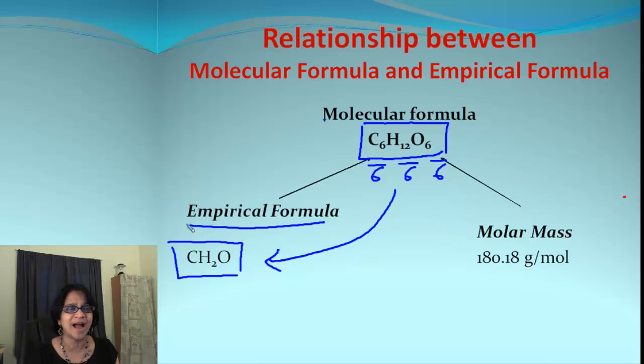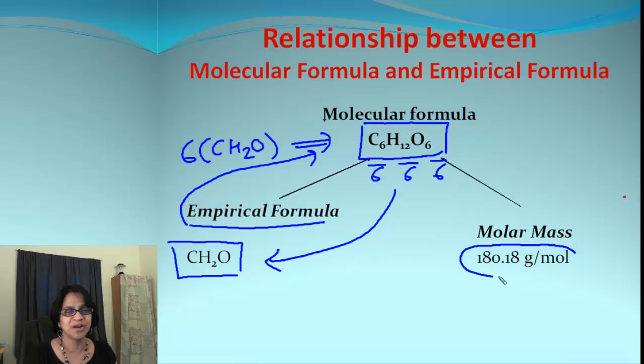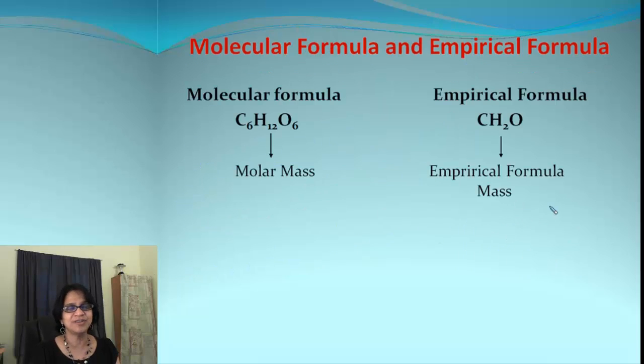We end up getting CH2O which is an empirical formula. Or if I am going to go back from empirical formula to molecular formula, if I multiply this by 6, what I end up getting is my molecular formula. So it's that simple. Now let's think about the molar mass and I want you to know molar mass for this compound is 180.18. And how do we get the empirical formula mass?